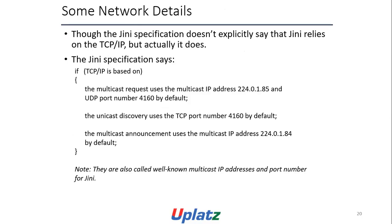Some network details: although the Jini specification does not explicitly state that Jini relies on TCP/IP, it actually does. The Jini specification says the multicast request uses multicast IP address 224.0.1.85 and a UDP port number. The multicast discovery uses multicast IP address 224.0.1.84 by default. These are also called well-known multicast IP address numbers for Jini.